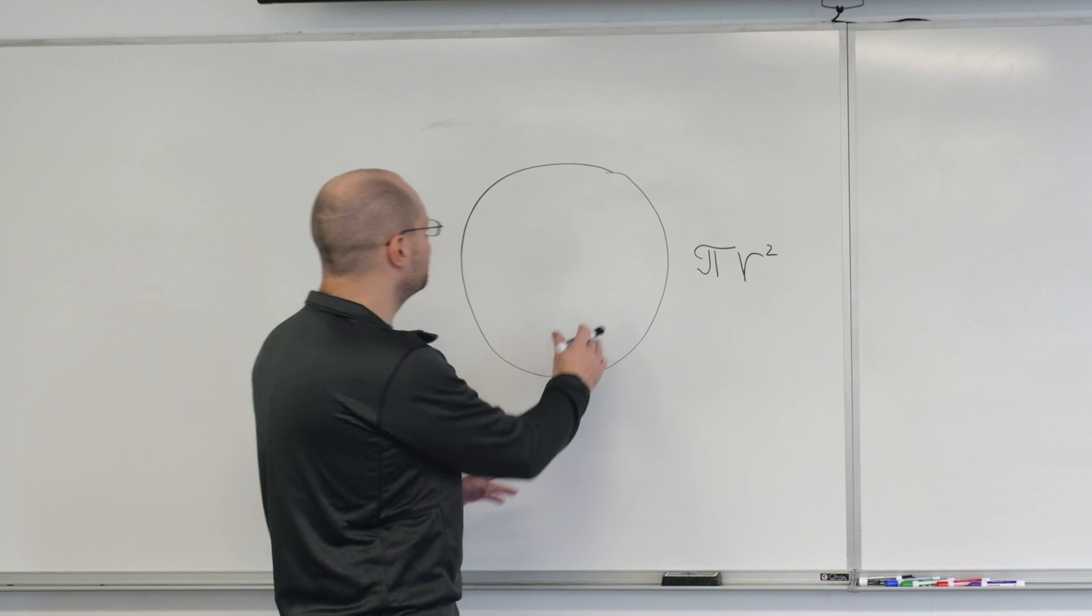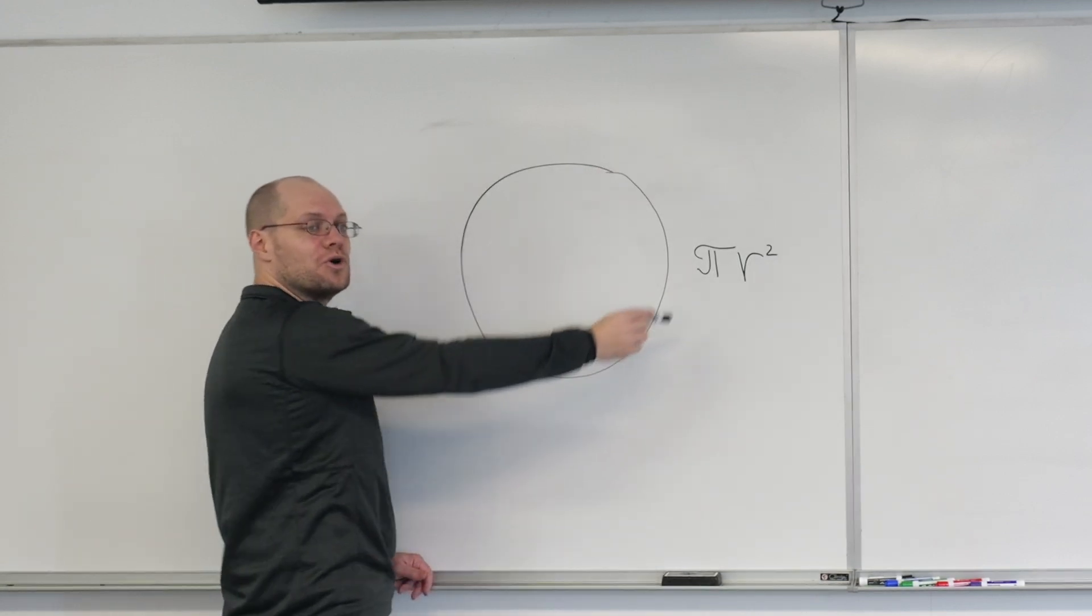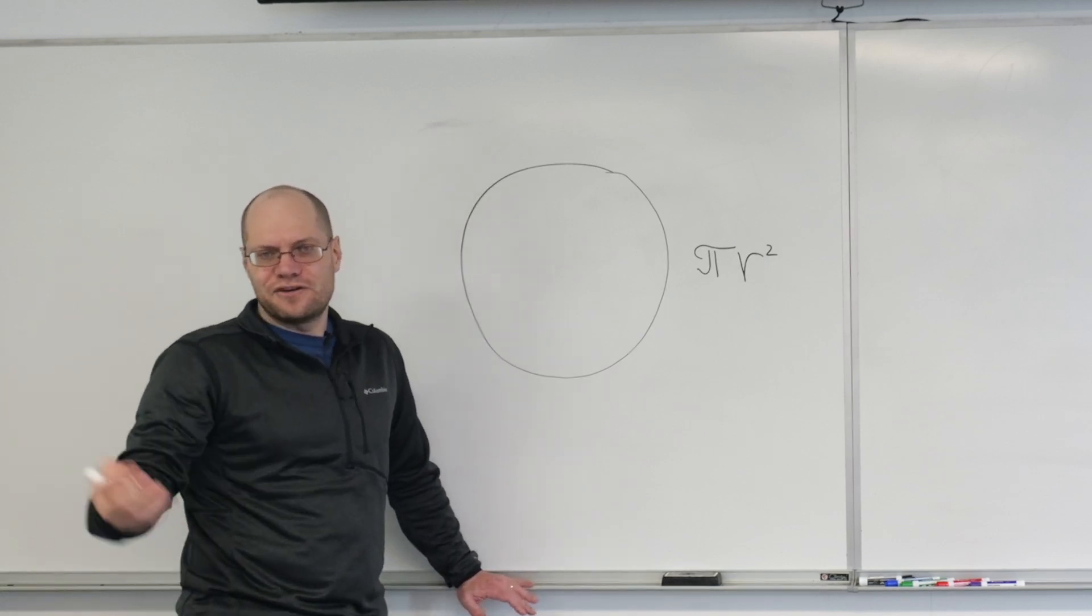And so the original question was, of course, given the diameter of a circle, what is its circumference?